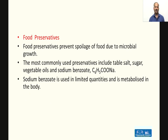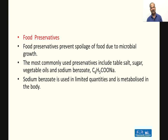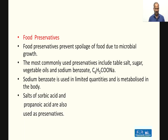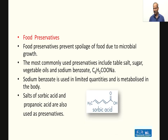In processed food materials, we use a lot of preservatives, including sodium benzoate, which is metabolized in the body. Salts of sorbic acid and propanoic acid are also used as preservatives. This completes our topic of Chemicals in Food. Thank you very much for watching this session.